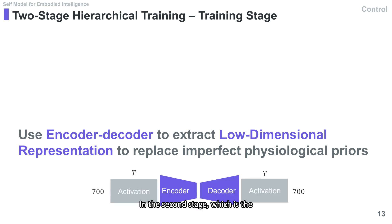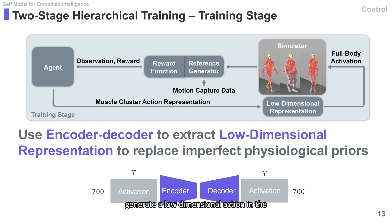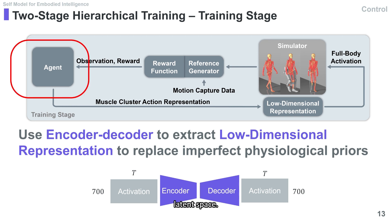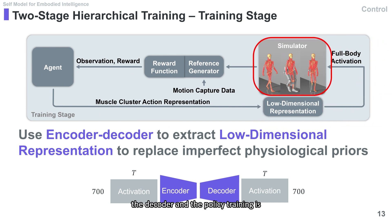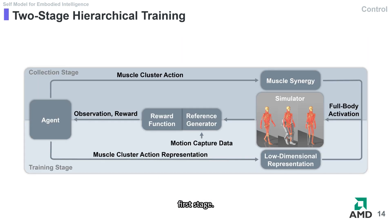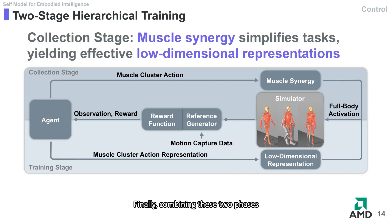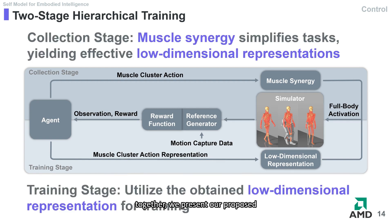In the second stage, which is the training stage, the agent only needs to generate a low-dimensional action in the latent space. This action is then reconverted back to the original high-dimensional space by the decoder, and the policy training is completed in a manner similar to the first stage. Combining these two phases together, we present our proposed algorithm for controlling high-dimensional musculoskeletal models.